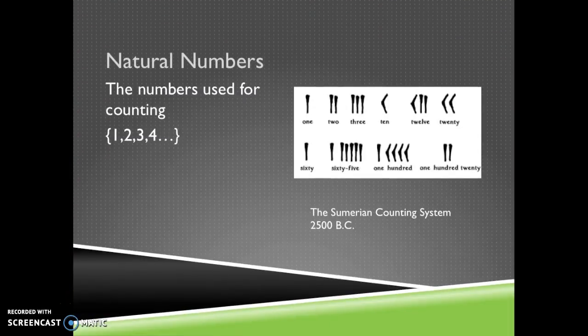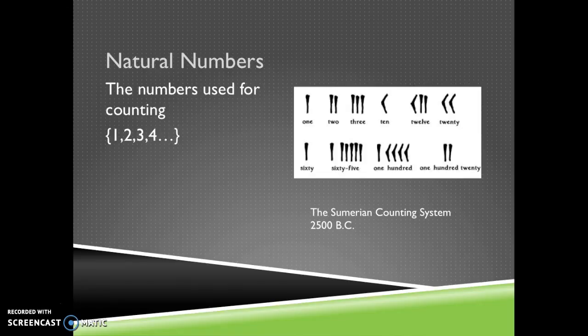If you ever wondered where numbers originated, the first numbers that existed were natural numbers. Those were the numbers that we used for counting. The Sumerian counting system was the first number system known of, invented in 2500 BC. They needed these numbers to say how many cattle am I going to trade to you, items like that when they're trying to deal with them. One, two, three, four. You learned how to count probably when you were a toddler and have been using that ever since.